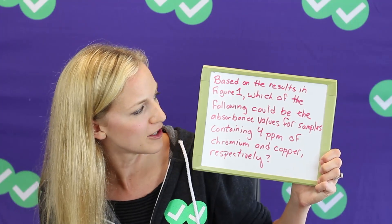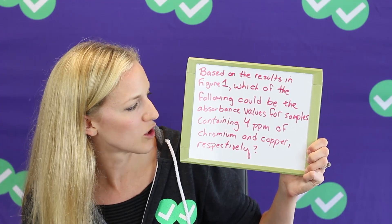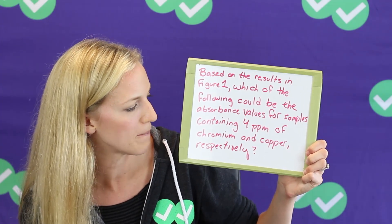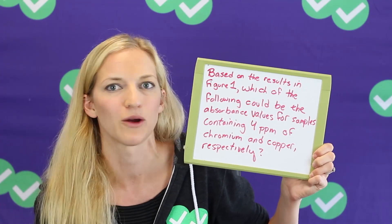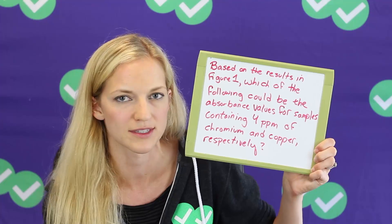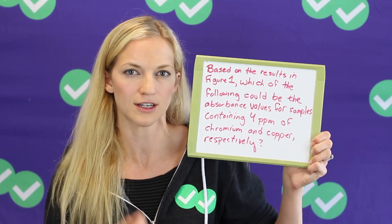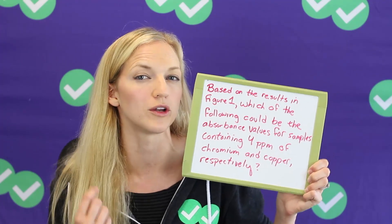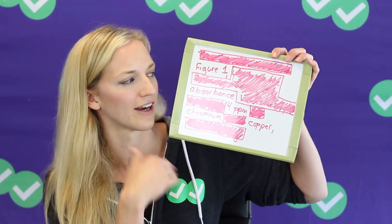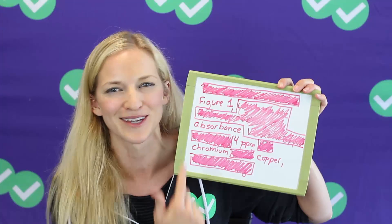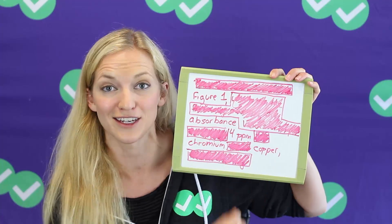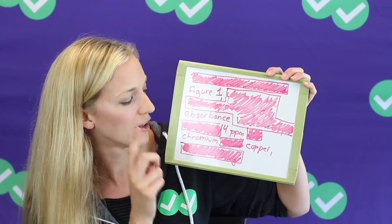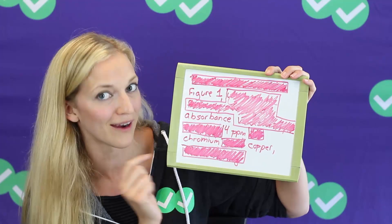Let's look at a sample question — you can also find this question and the graph for it in the blog post below this video. Based on the results in figure one, which of the following could be the absorbance values for samples containing four ppm of chromium and copper respectively? Now if you're like most people you'll look at this and say: what does that mean? I don't know what ppm is. So what we want to do is just pick out the key terms — the words and numbers we're going to look up on the chart. So here are my key terms: figure one, absorbance, four ppm, copper, and chromium.